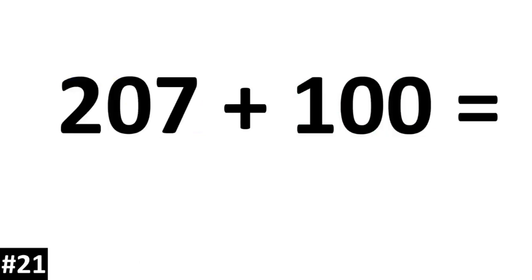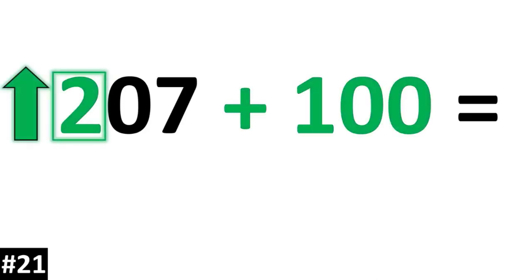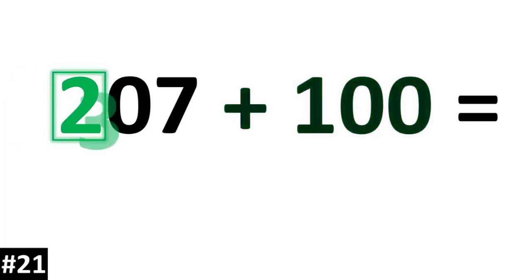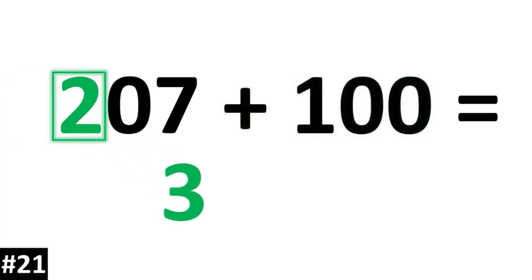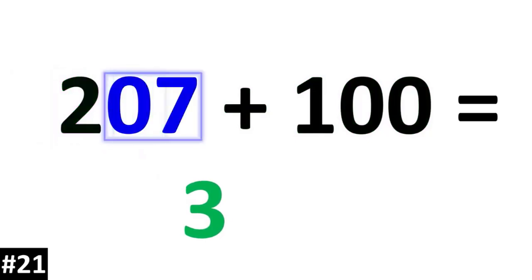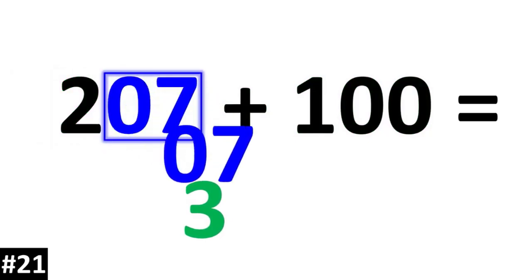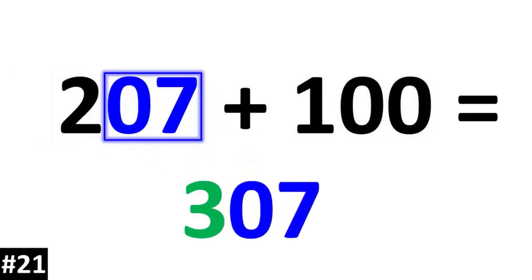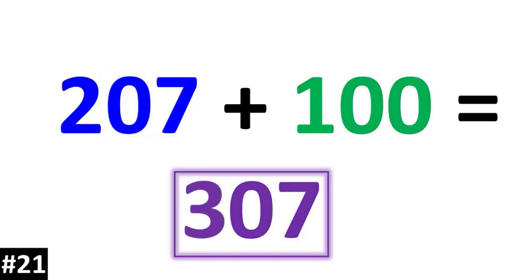207 plus 100. 207 has a hundreds digit of 2. If we add a hundred, that 2 becomes a 3. The other numbers stay the same, so we have 307.